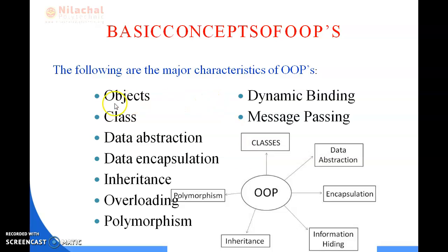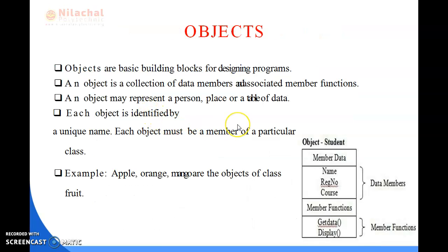First, we will study about Objects. Objects are the basic building blocks of our designing programs. An object is a collection of Data Members and Associated Member Functions. An object may represent a Person, Place, Table, or Other Data. Each object is identified by a unique name, and each object must be a member of a particular class.